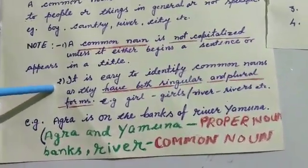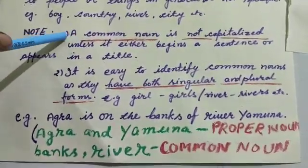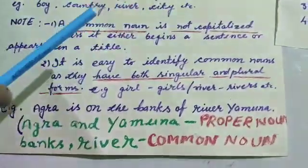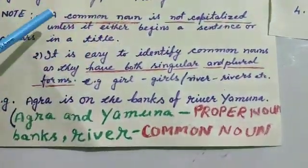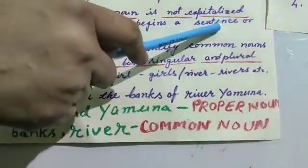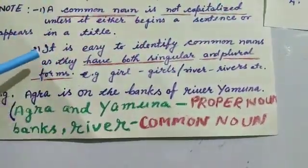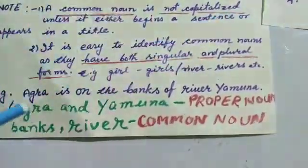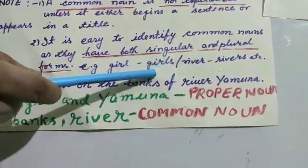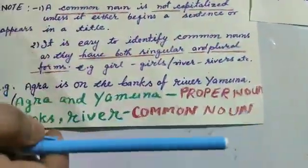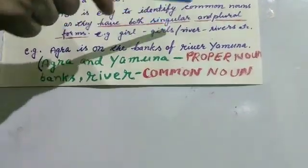Now to support the definition, here are some notes which are very useful. Rule number one: a common noun is not capitalized unless it either begins a sentence or appears in a title — it should not be written in capital letters. Rule number two: it is easy to identify common nouns as they have both singular and plural forms. For example, 'girl' can be made plural as 'girls,' 'river' as 'rivers,' but 'Ram' cannot become 'Rams' and 'Ganga' cannot become 'Gangas.' Common nouns can be changed to plural or singular form.